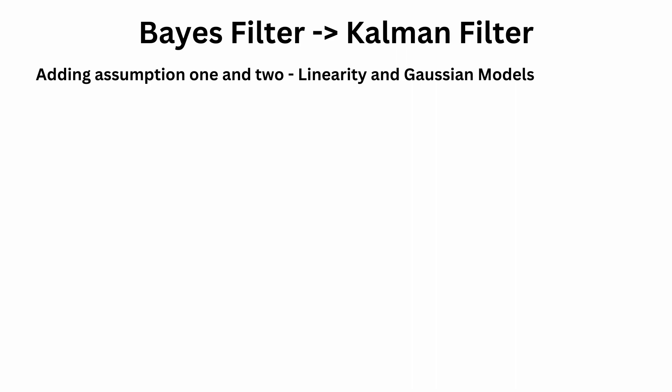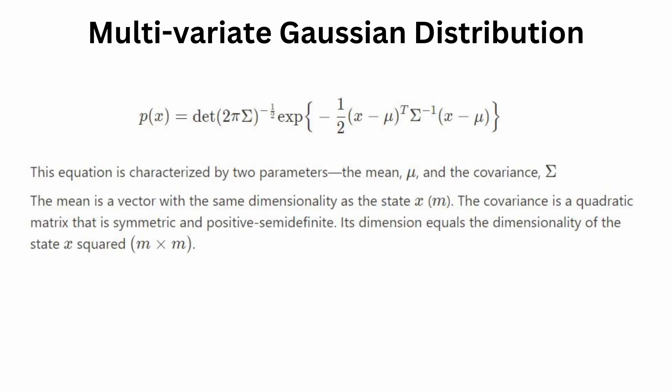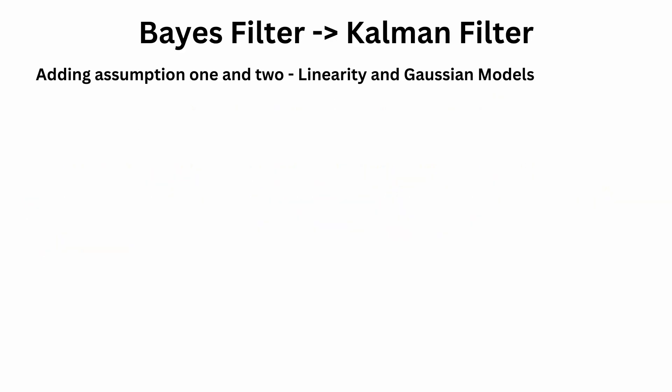Now let's introduce the second assumption: all distributions are Gaussian. To introduce this in our Bayes filter equations, we first need to describe what a generic multivariate Gaussian distribution is. A generic multivariate Gaussian distribution is characterized by two parameters: the mean and the covariance. The mean is a vector with the same dimensionality as the state x. The covariance is a quadratic matrix that is symmetric and positive semi-definite, with dimensions equal to the dimensionality of the state squared. So if your state vector is of dimension N, your covariance would be N×N. We will now model all probability distributions in our Bayes filter equation as Gaussian and combine both assumptions.